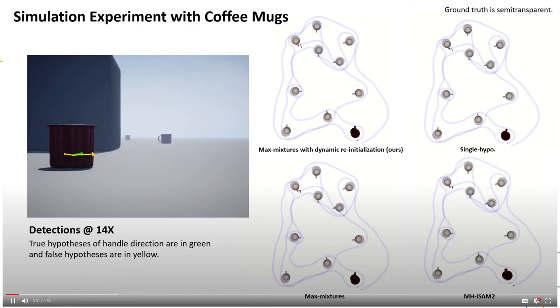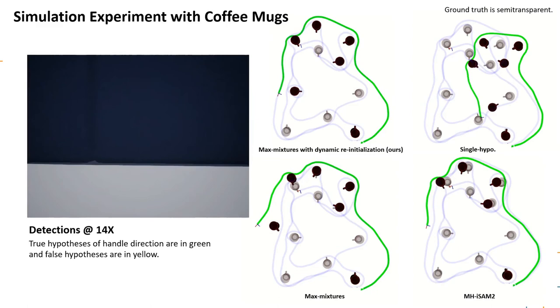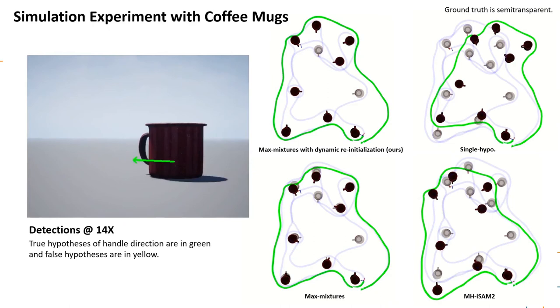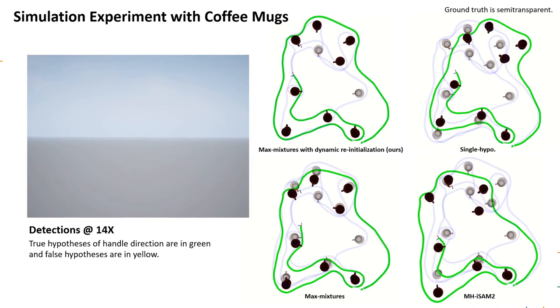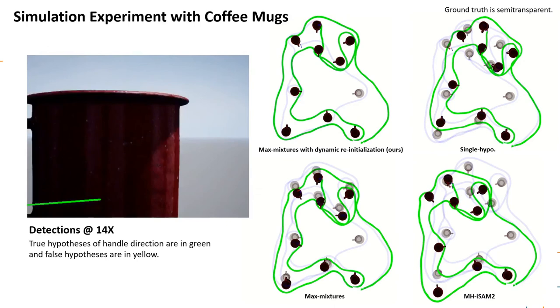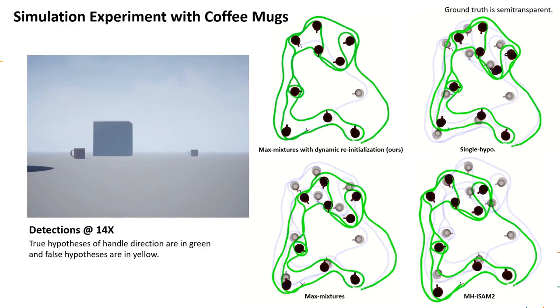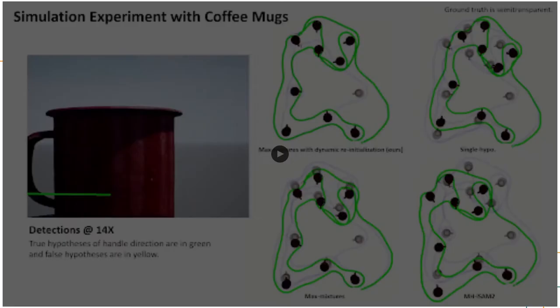We used four different methods to process the sequence: the single hypothesis method, MH-iSAM2, and the max mixtures method with and without the dynamic reinitialization procedure. We present the ground truth trajectory and mug poses as semi-transparent and SLAM estimates. At the top right, the single hypothesis method has a large deviation in its trajectory estimate because of its inconsistent hypothesis decisions. At the bottom right, we present the MH-iSAM2 solution from the most probable hypothesis. Since the optimal estimate has been pruned out earlier, its final SLAM estimation is suboptimal. The vanilla max mixtures method gives the inaccurate result because its solution is trapped in the local optimum. But with the consensus-informed optimization procedure, our method attains the most accurate SLAM estimation.